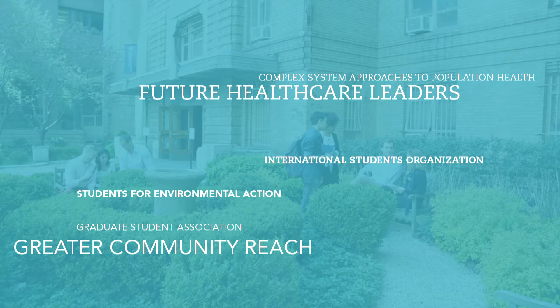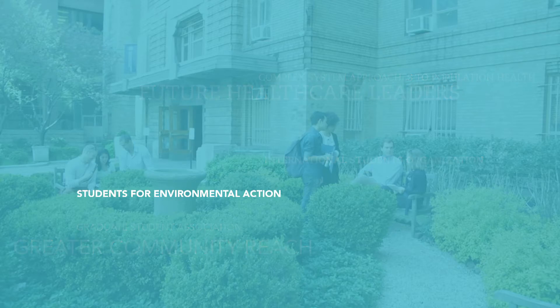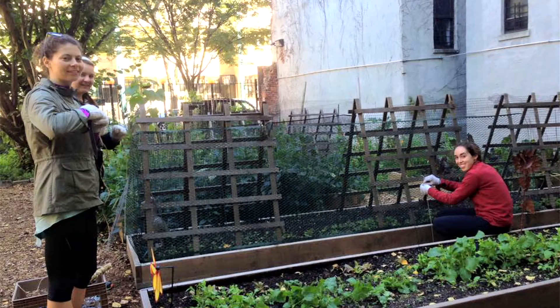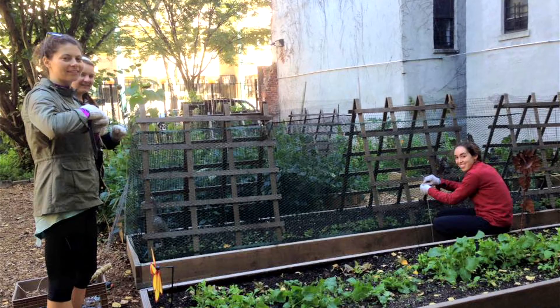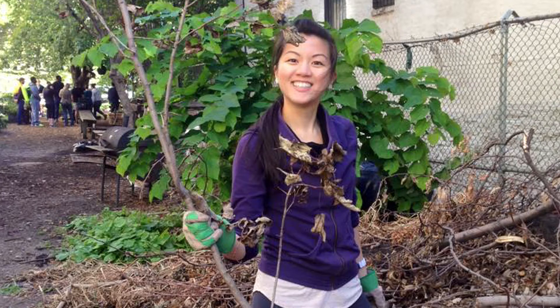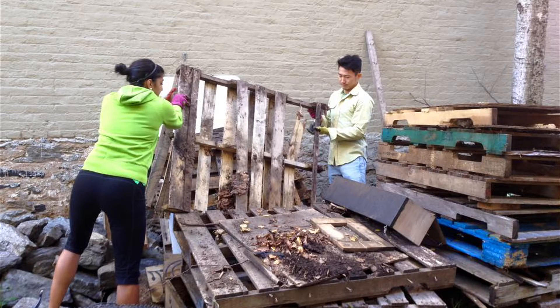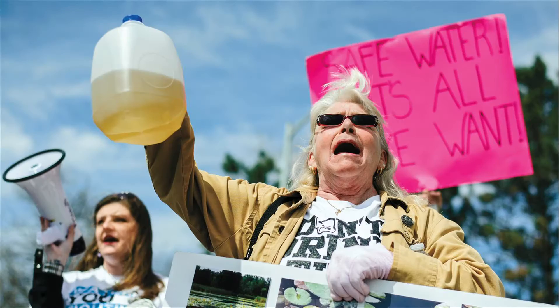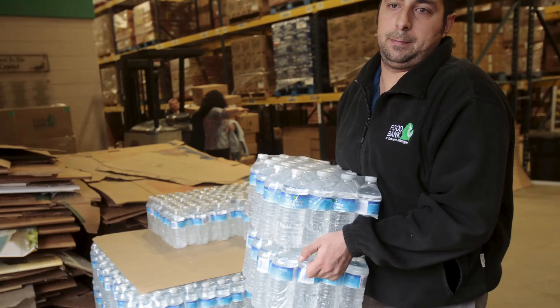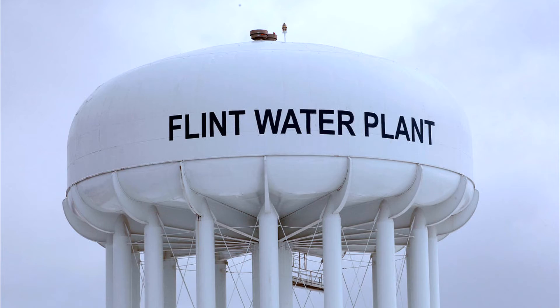Students for Environmental Action aims to get students together around environmental issues and sustainability on campus. We're always trying to do something that gets students to act while they're here. We have a paper reduction initiative, a recycling initiative, and we get students out into the community. We had a really interesting event about environmental justice in the United States, particularly around Flint.